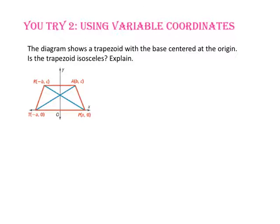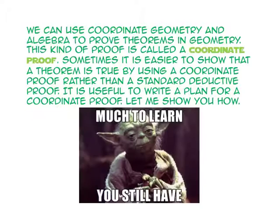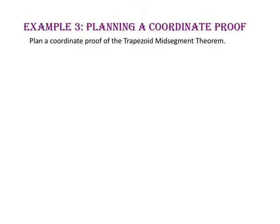Pause the video and do you try number 2. We can use coordinate geometry and algebra to prove theorems in geometry. This kind of proof is called a coordinate proof. Sometimes, it is easier to show that a theorem is true by using a coordinate proof rather than a standard deductive proof. It is useful to write a plan for a coordinate proof. Let me show you how. In example 3, we will plan a coordinate proof of the trapezoid mid-segment theorem.